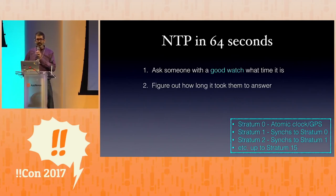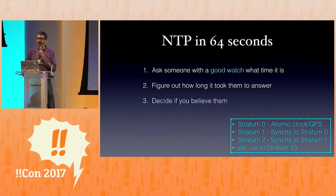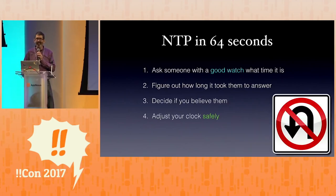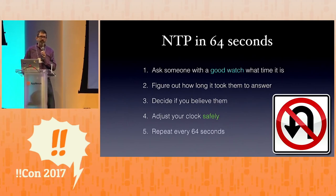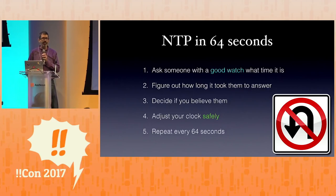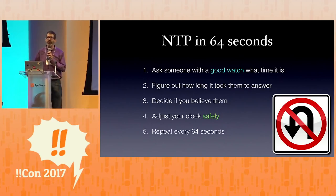Find out how long it took them to answer — they tell you this is the time, figure out that latency, and calculate how much to offset by that. Then decide if you believe them. If they told you it was 1776 or 1 million BC, you probably don't want to set your clock to match that. But if you do believe them, you want to adjust your clock safely. Safely means don't run in reverse. Sometimes you have to, but you try to avoid that. Then you repeat that every 64 seconds — that's the default on a Mac and probably on Windows. Every 64 seconds, forever, you synchronize to check if you are drifting, and you can do very gentle corrections that way.